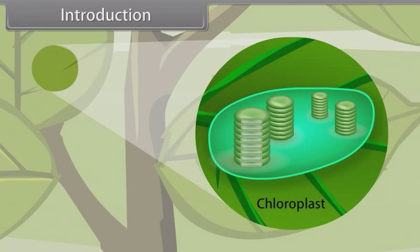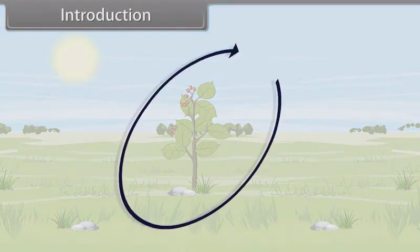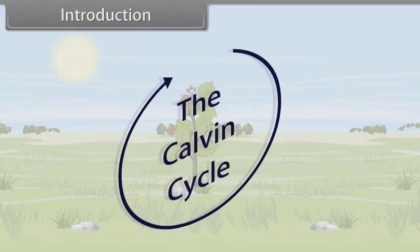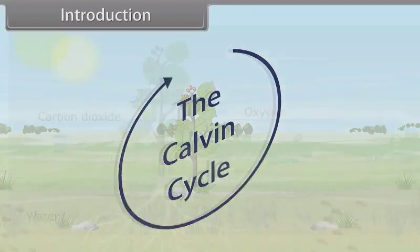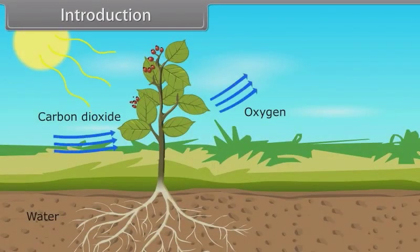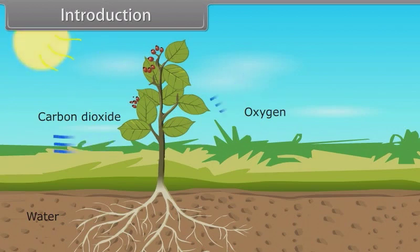There are two cycles through which photosynthesis takes place: the Calvin cycle and C4 cycle. The rate of photosynthesis is affected by availability of light, carbon dioxide concentration, etc. Throughout this module, we will learn photosynthesis in higher plants.